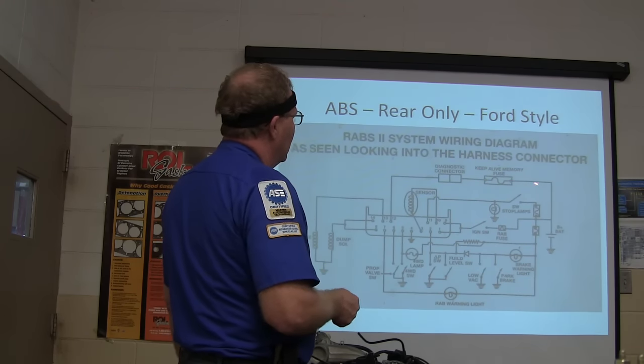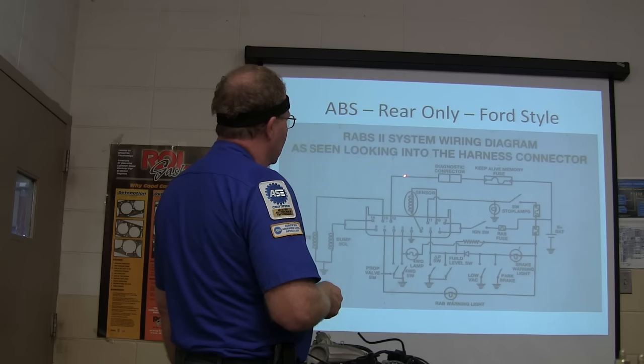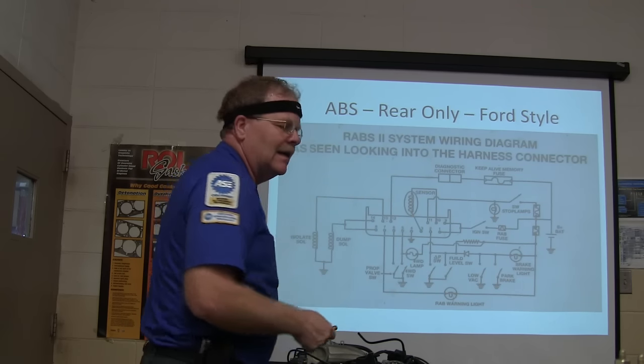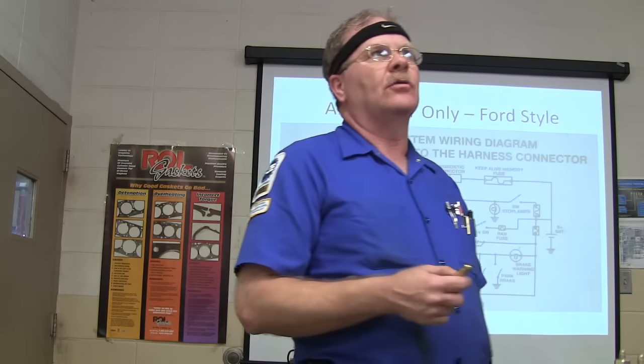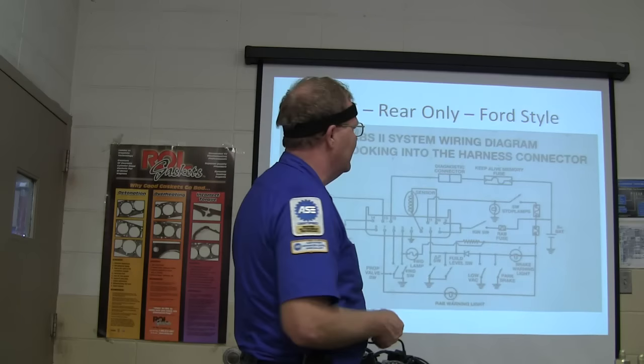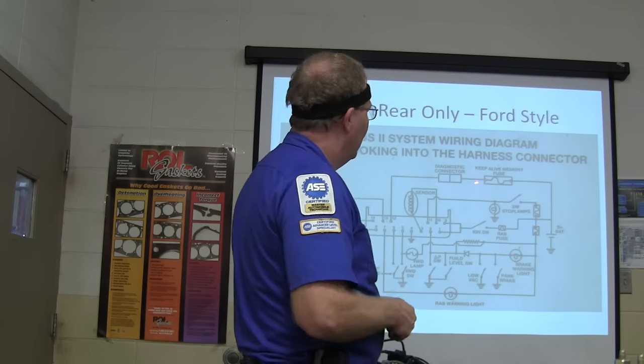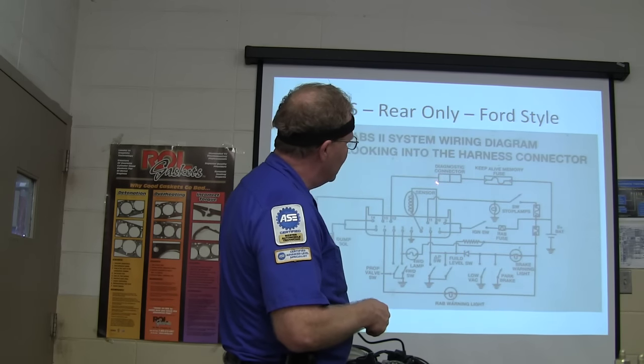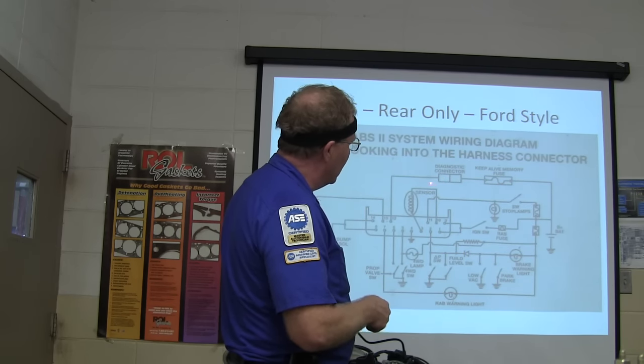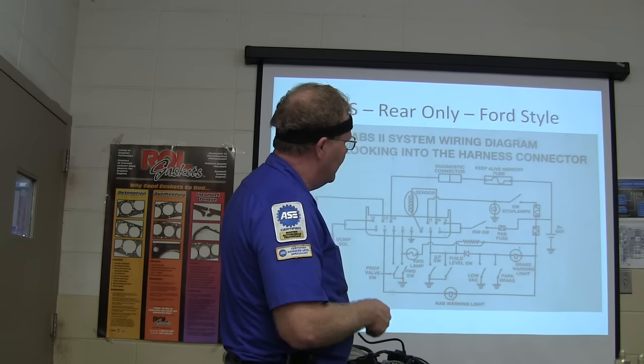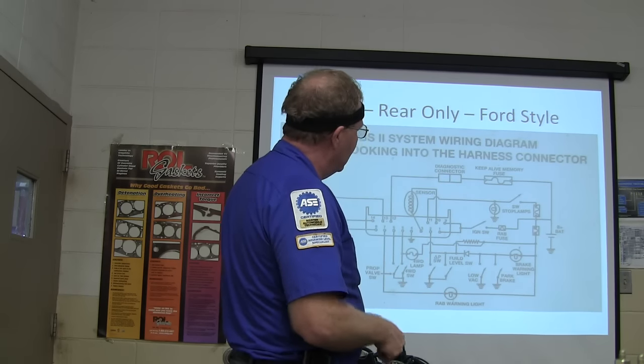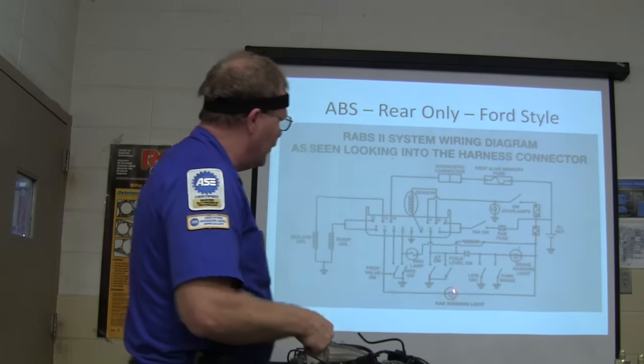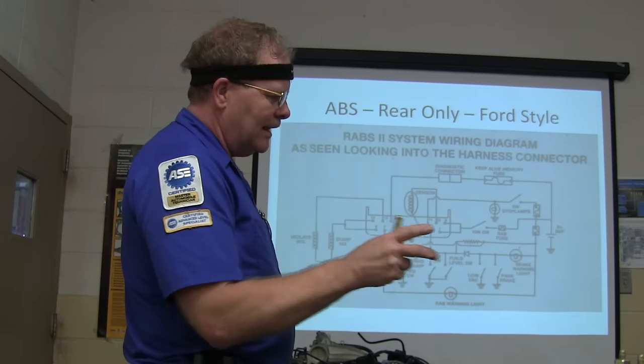And your diagnostic connector, from your keep-alive fuse, is right here. You notice it's only got one wire going through it. In the early days of these Ford ABS systems, they made it mandatory on pickups and vans in 1987, and this was 10 years after that. Initially, they had the diagnostic connector without any power going to it, and all you had to do, when your code was flashing, if you grounded that just briefly, then your RAB's warning light down here would blink that code out.